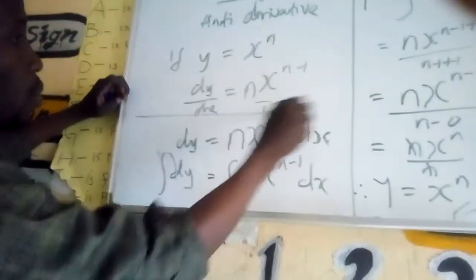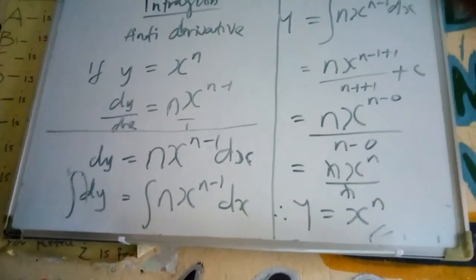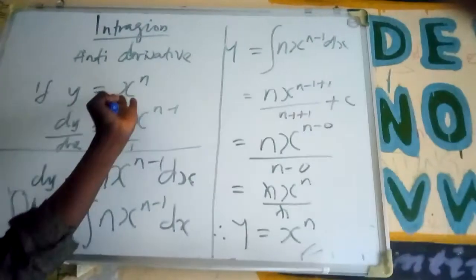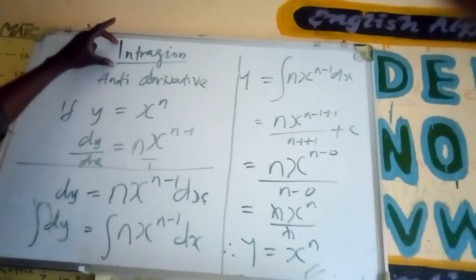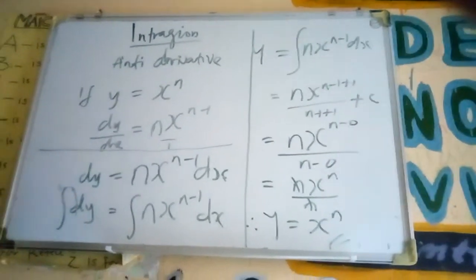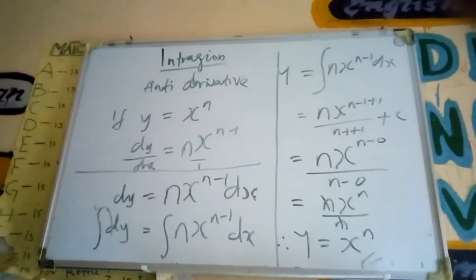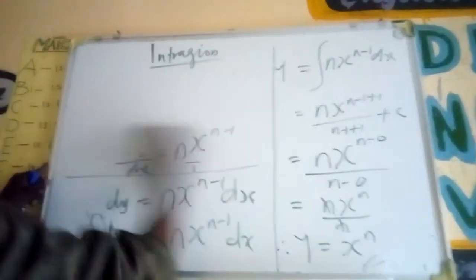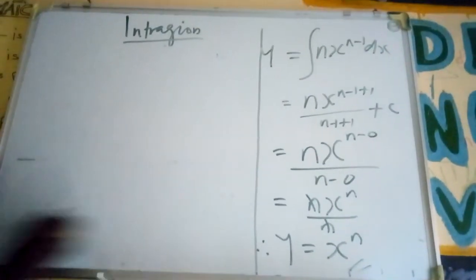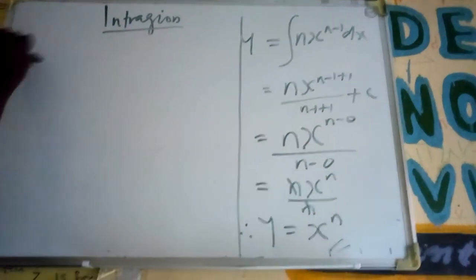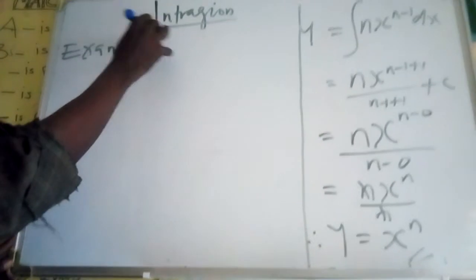We apply — this is my differentiation from here to here, we differentiate. So from this differentiation, we integrate. At the end, we reverse — that is why we say integration is the anti-derivative.